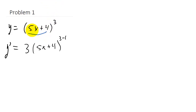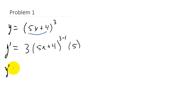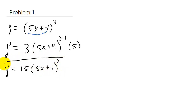So we multiply by the derivative of 5x plus 4: the derivative of 5x is 5, and the derivative of 4 is 0. That gives us y prime equals 3 times 5, which is 15, times 5x plus 4 squared. And this would be your answer.